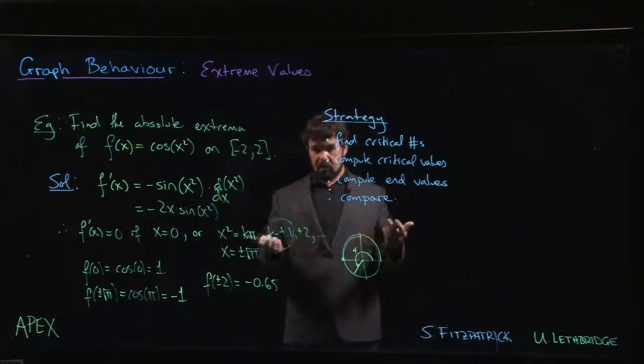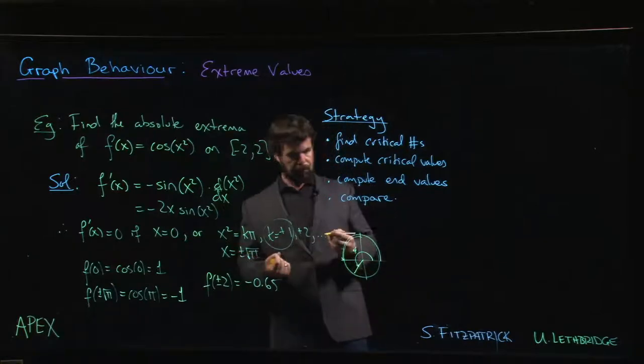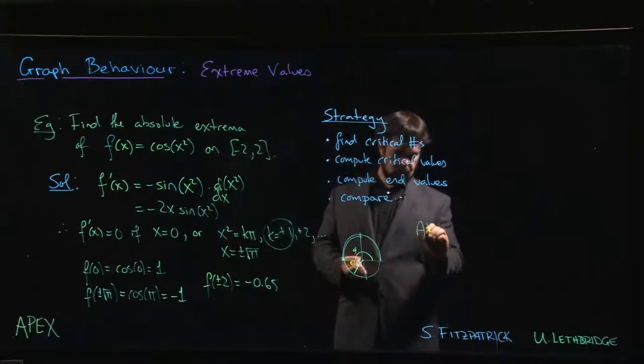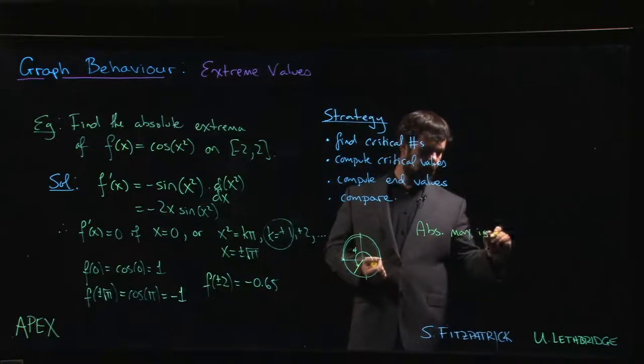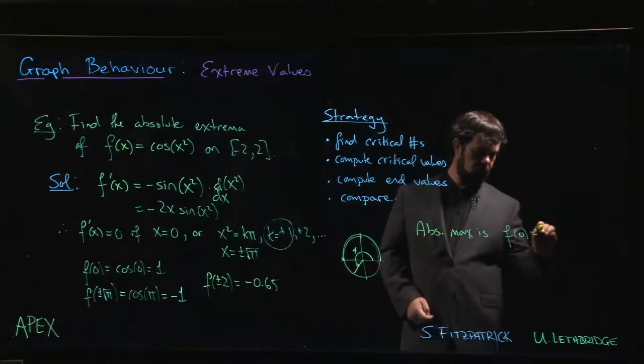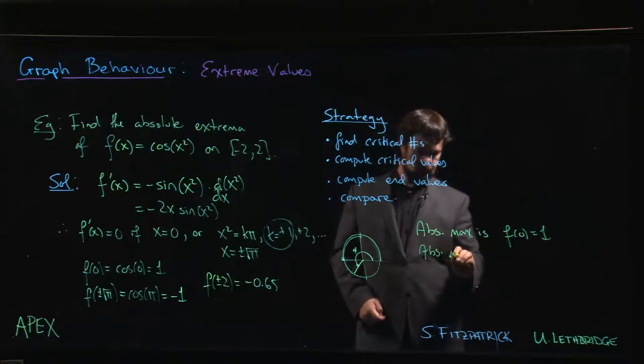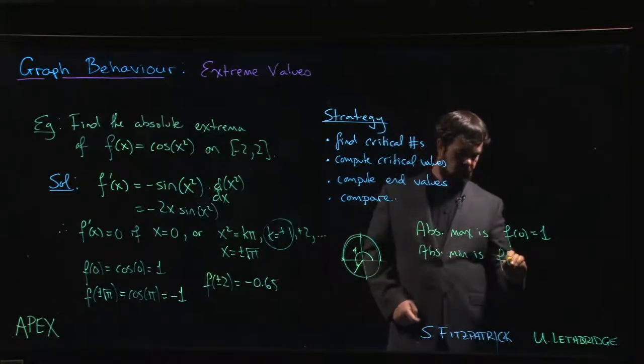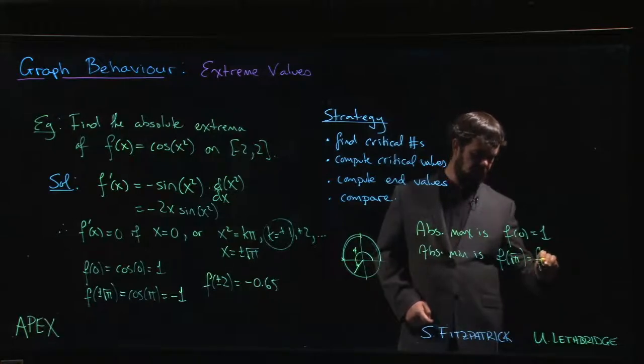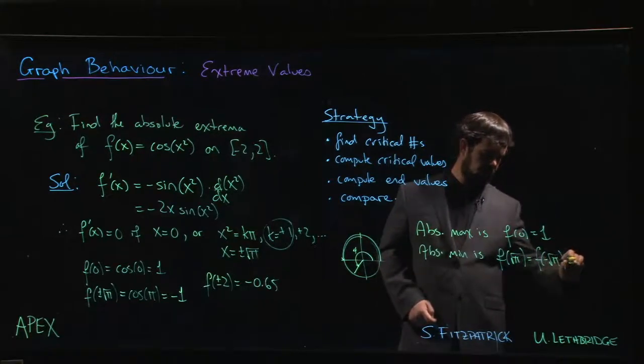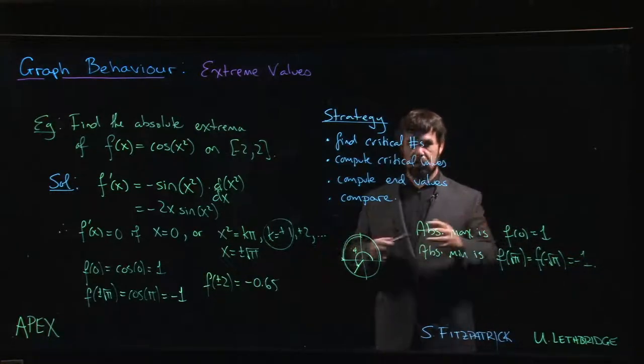So it's nice to know the value, but you don't actually need to know the value to solve the problem. We can say that the absolute max is going to be f of 0, which is 1, and the absolute min is f at root pi, which is the same as the value you get at f at minus root pi, and at those points you get minus 1. So we've solved the problem.